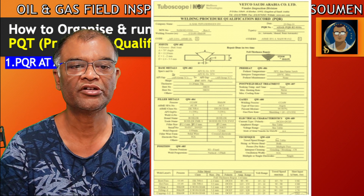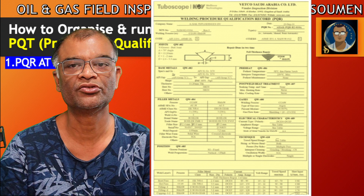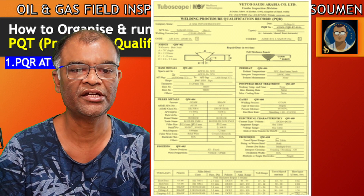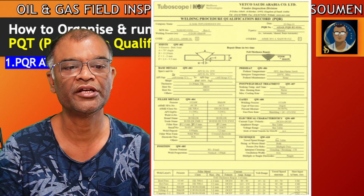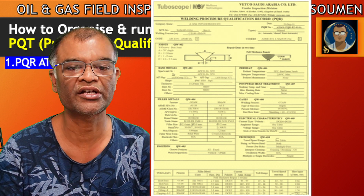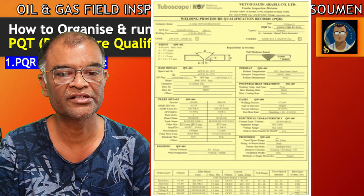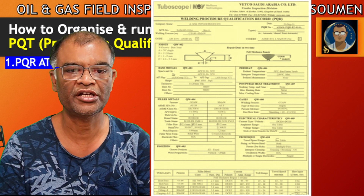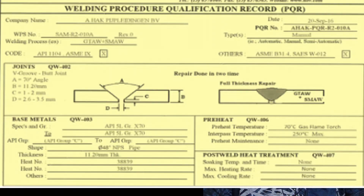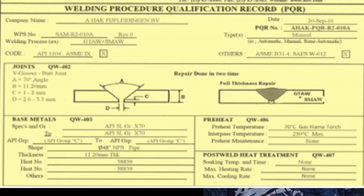Let us see how a PQR looks. This is an actual PQR from a previous project. You can see the blocks — it looks similar to a welding procedure specification. There are sections for joint design, base metal, filler metal, preheat, post-weld heat treatment, gases, electrical characteristics, techniques, and most importantly the welding parameters at the bottom in tabular format.